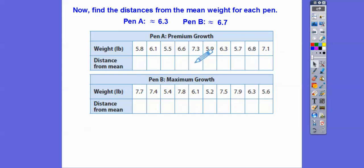There it is. Similarly, we're going to do that with this guy. 7.7 minus 6.7 is going to be 1.0. 7.4 minus 6.7 is going to be 0.7 and so on. That's going to get us all of those numbers. And then, we find the mean of those distances from the mean.